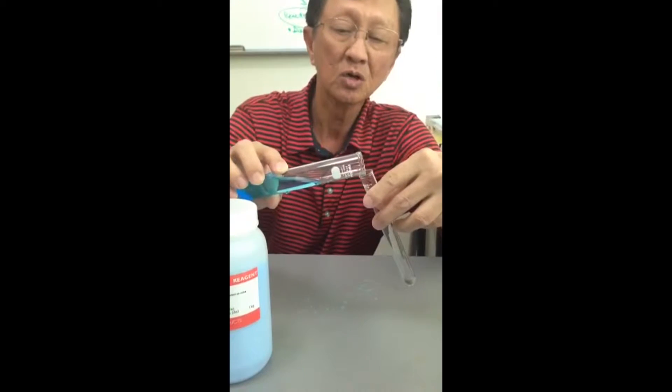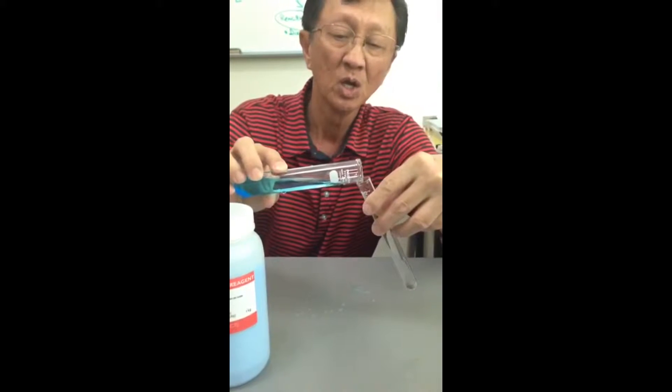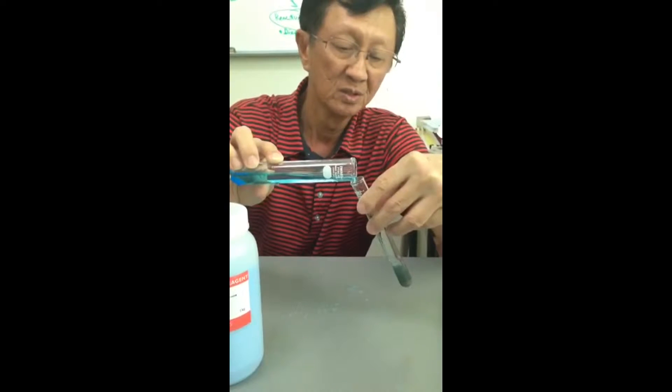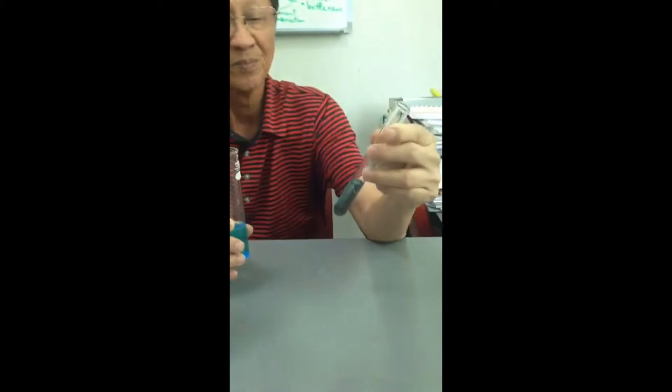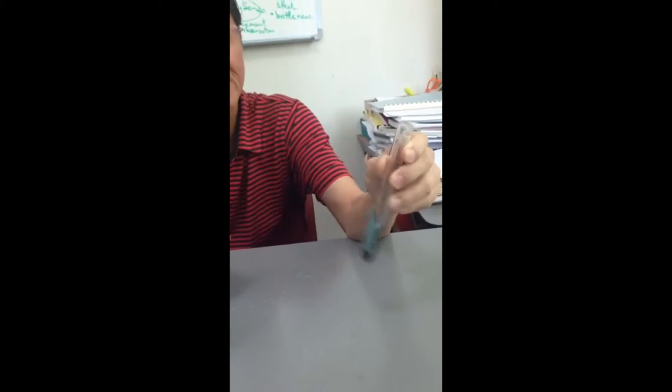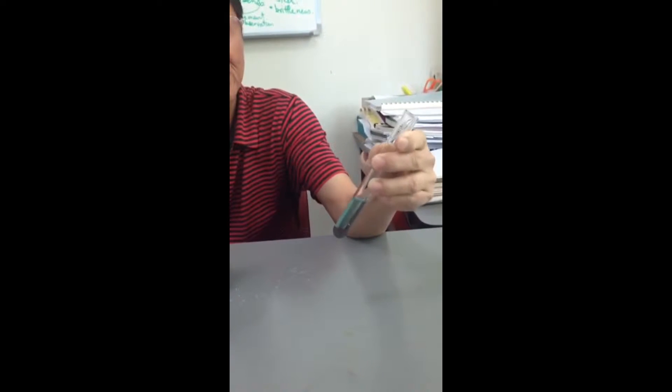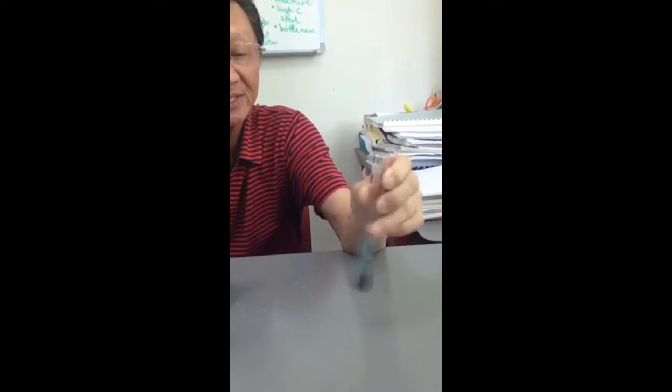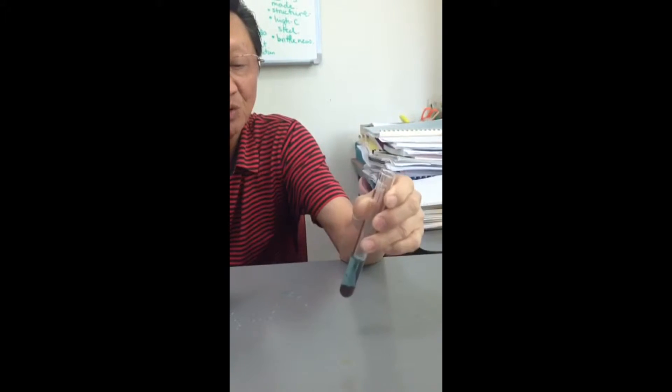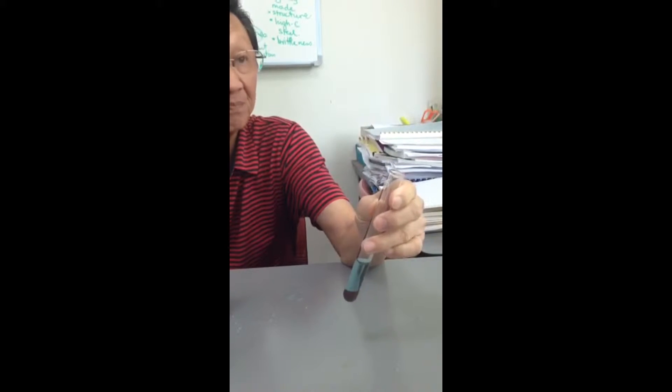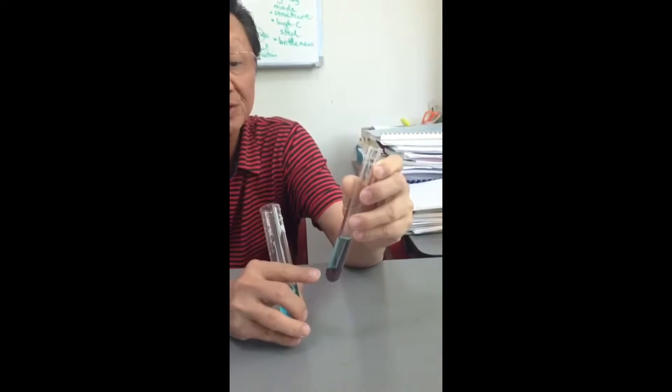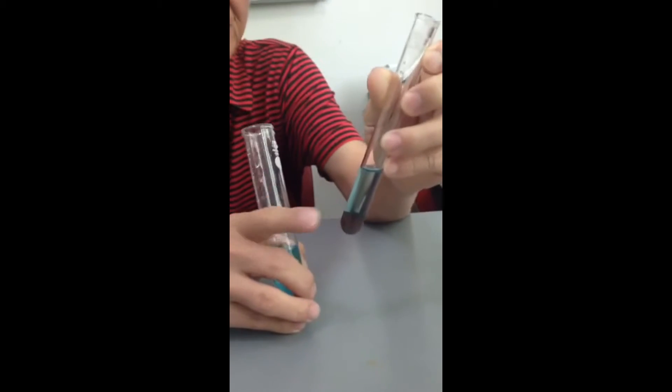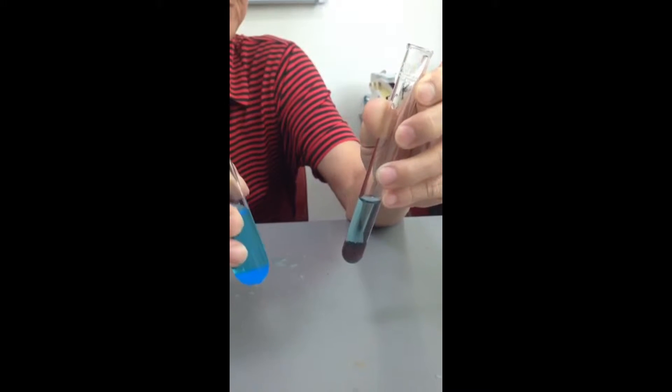The blue copper 2 sulfate solution will turn color. Can you see that it is turning? The blue color disappears. And the reddish color that you see is the copper that was displaced from here.